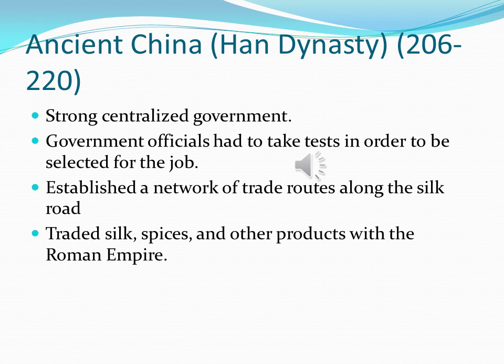Ancient China: the Han Dynasty, 206 BCE to 220 CE. It had a strong centralized government where officials had to take very difficult entrance exams to be selected for their jobs. They established a network of trade along the Silk Road and traded things like spices, silk, and other products with the Roman Empire. Those are a few important details about the Han Dynasty that you need to know for your Regents.